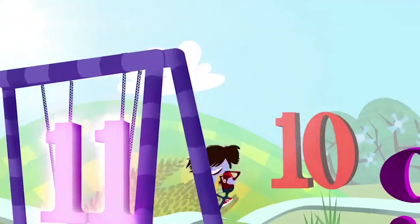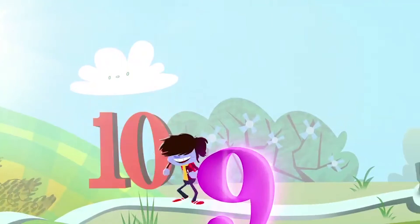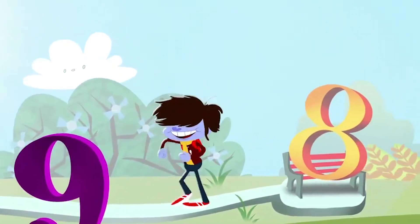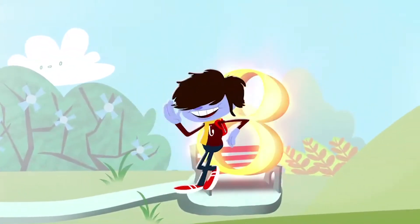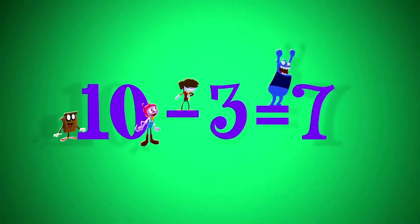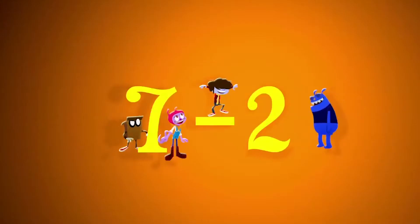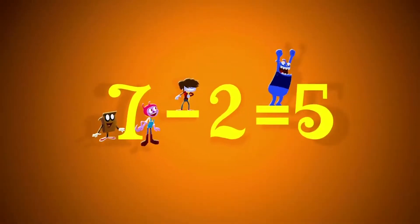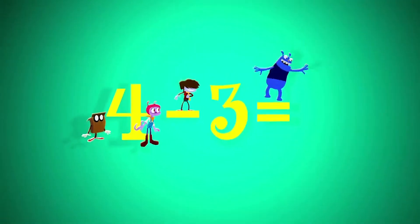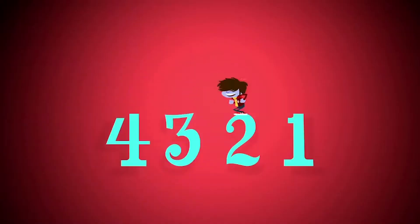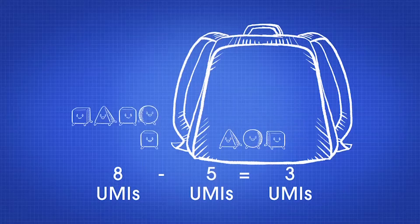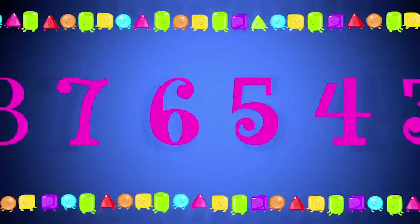He subtracts when he counts back. We subtract by counting back. 10 minus 3 equals 7 — start at 10, 9, 8, 7. 7 minus 2 equals 5 — start at 7, 6, 5. 4 minus 3 equals 1 — start at 4, 3, 2, 1. That's our song, and now we're done.